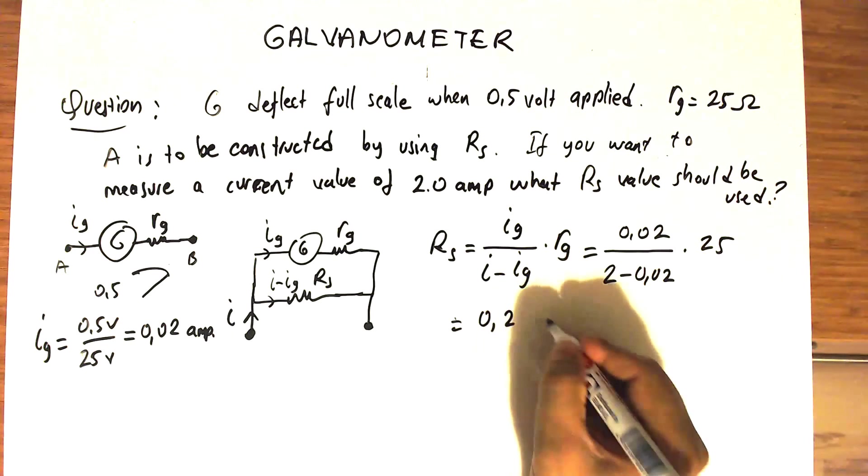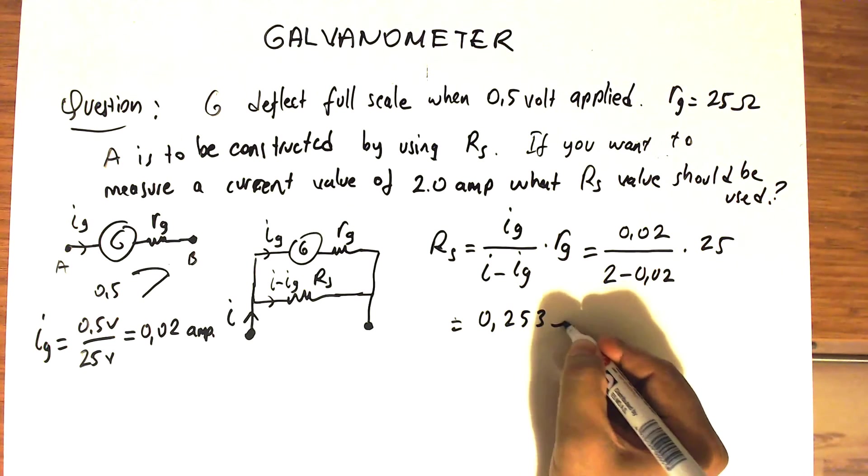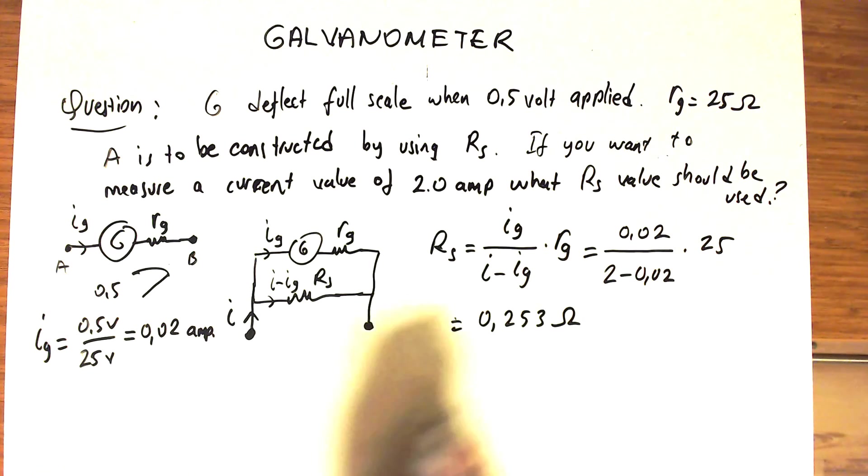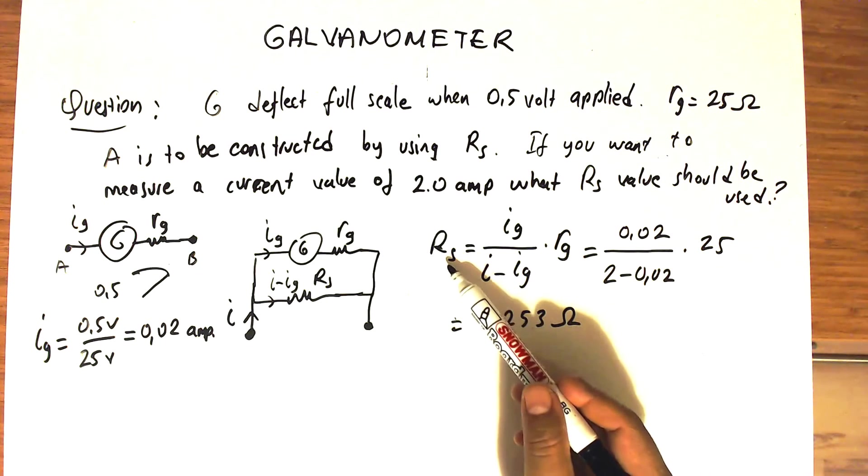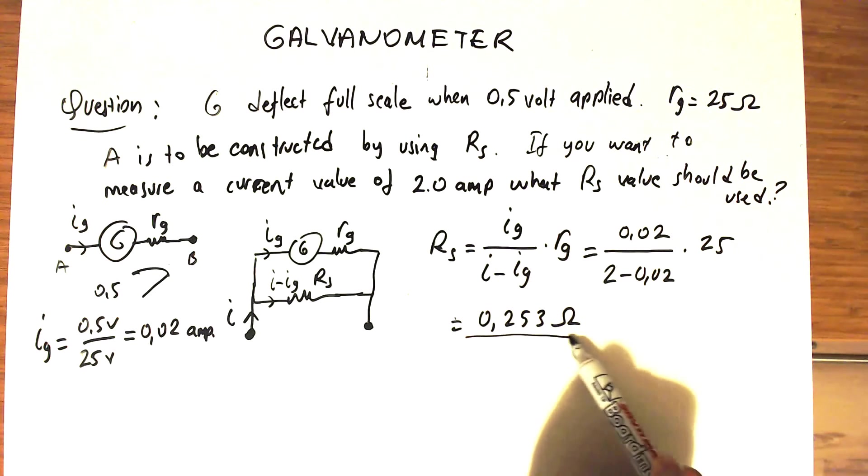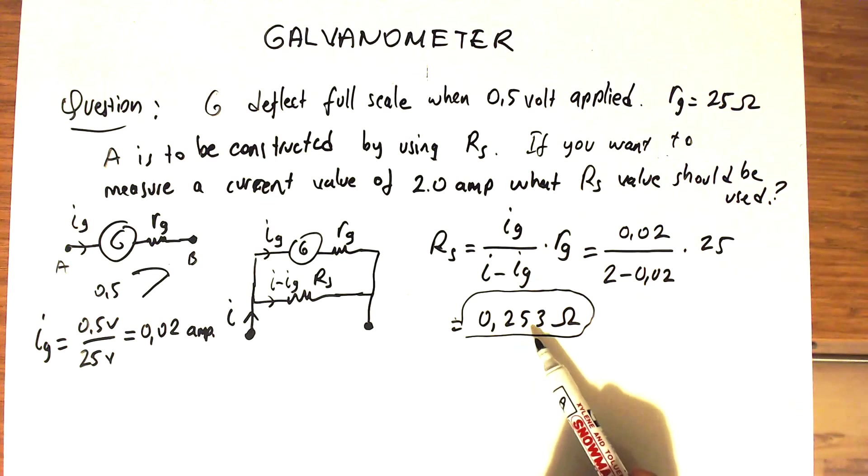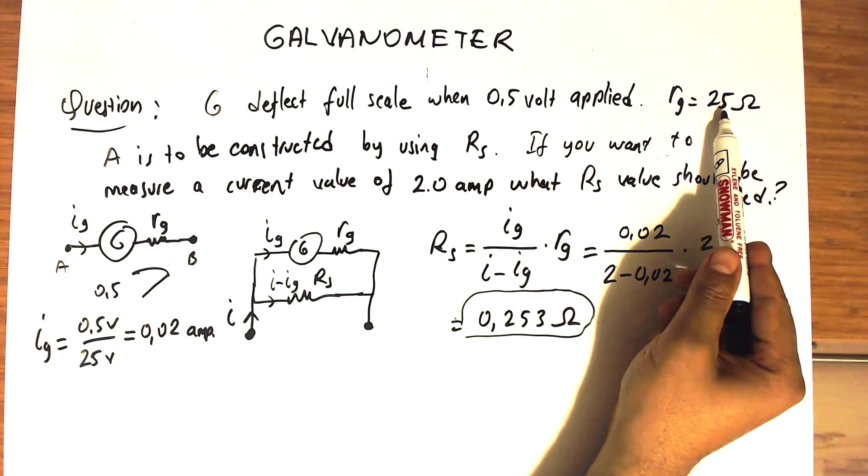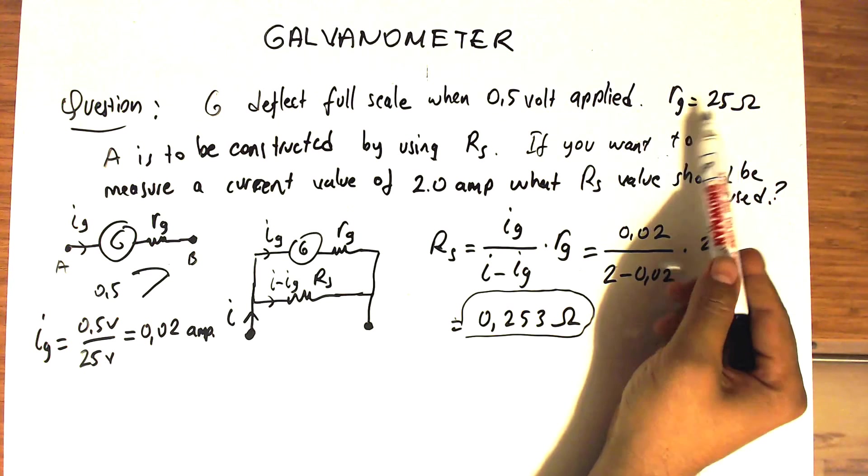0.253 ohms. So this is it. If you choose your shunt resistance to be this value, you see this is compared to the internal resistance of the galvanometer a very small number. In fact, it is almost one percent of the internal resistance of the galvanometer.